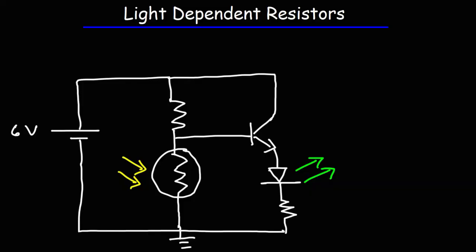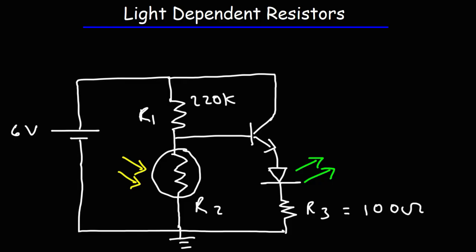Here is the schematic diagram of the dark activated LDR circuit. Let's call this R1, R2, and R3. R1 is a 220 kilo-ohm resistor, R3 is a current limiting resistor set at 100 ohms to limit the current flowing through the LED so it doesn't burn up. Q1 is an NPN transistor, and R2 is the LDR — the light dependent resistor. When the light is off, the resistance is close to 200K.